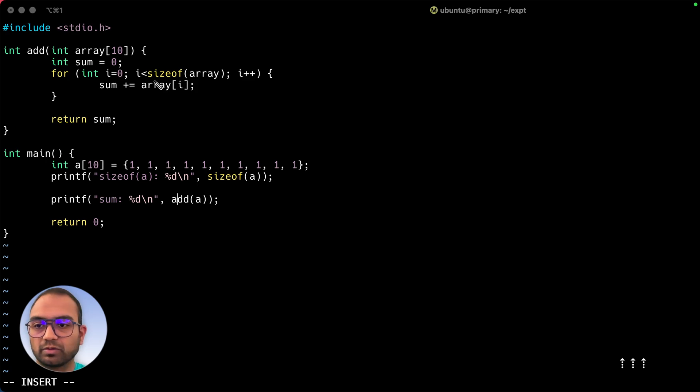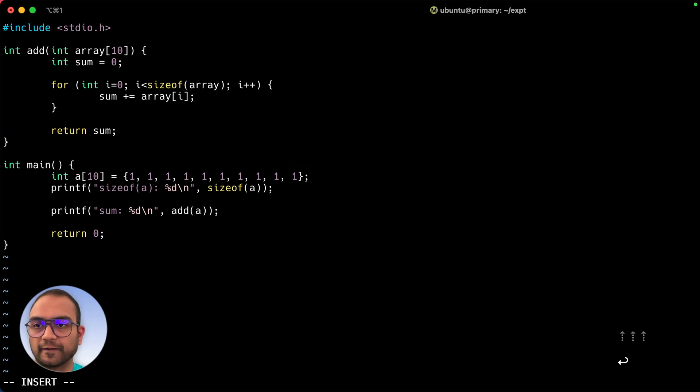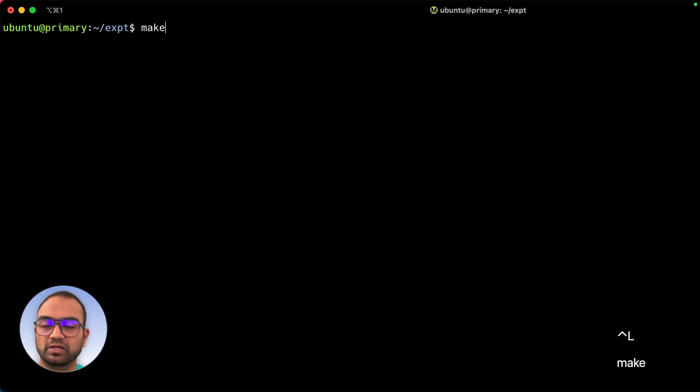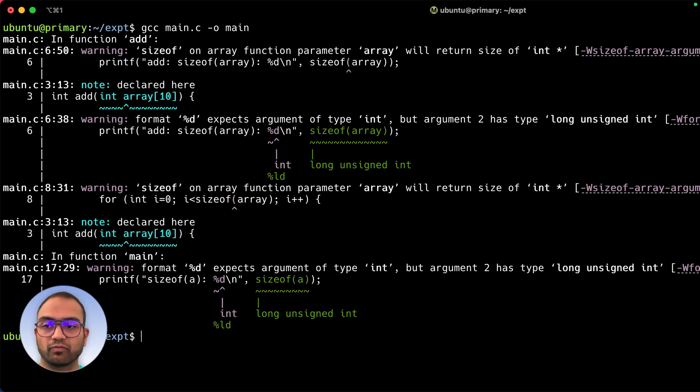Let me also do a printf inside the add function. This says size of array. So let's not worry about the sum getting printed here. Let's go back, let me clear the screen and compile it to main. And we do see a lot of warnings. Even though the code has compiled, we do see a lot of warnings.